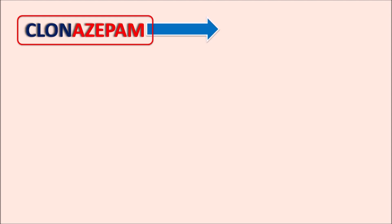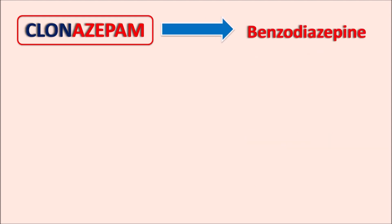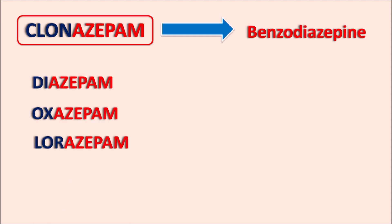What is this drug Clonazepam? The suffix '-azepam' indicates this drug is a benzodiazepine. We have a few other drugs within this category such as Diazepam, Oxazepam, Lorazepam, and Temazepam — all ending with the suffix '-azepam', indicating they belong to the category of benzodiazepines. The last three letters PAM indicates they are positive allosteric modulators.